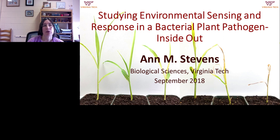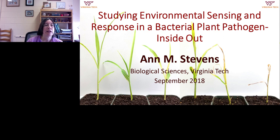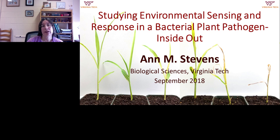The bacterium is Pantoea stewartii subspecies stewartii. It is a gram-negative rod in the Enterobacteriaceae family, with a characteristic yellow pigment visible from the colonies in the circular inset on this slide. It is the causative agent of Stewart's wilt disease, and the principal host damaged by this pathogen is maize, particularly sweet corn and popcorn varieties. Field corn varieties have often been bred for resistance. The disease is primarily transmitted to young corn plants by the corn flea beetle, native to North America, making the disease most prevalent in Midwestern and Mid-Atlantic states. Seed corn must be screened for the bacterium to prevent its global dissemination.